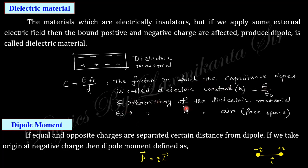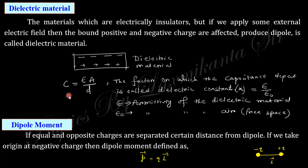The dipole moment depends on the dielectric constant, which is epsilon divided by epsilon-naught. Here epsilon is the permittivity of the dielectric material and epsilon-naught is the permittivity of air (or vacuum). The ratio of these two permittivities is known as the dielectric constant, and the dielectric constant determines the capacitance.